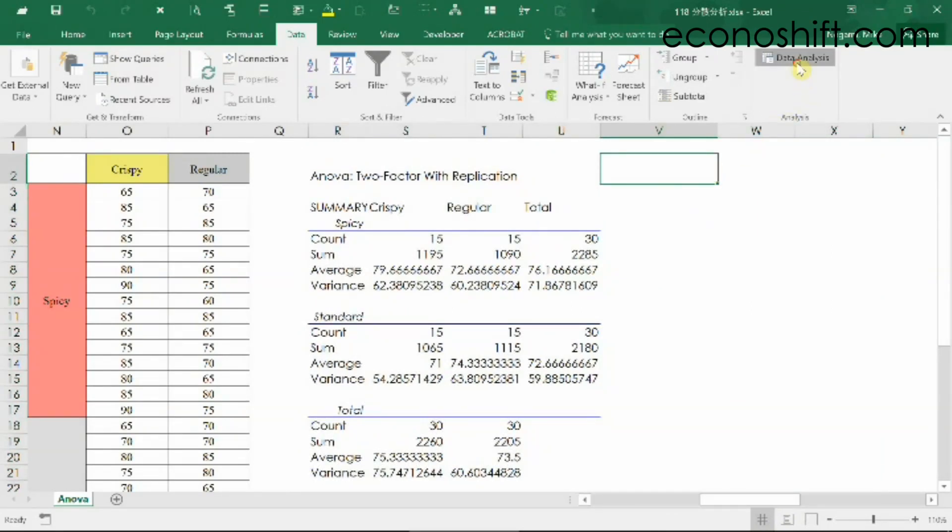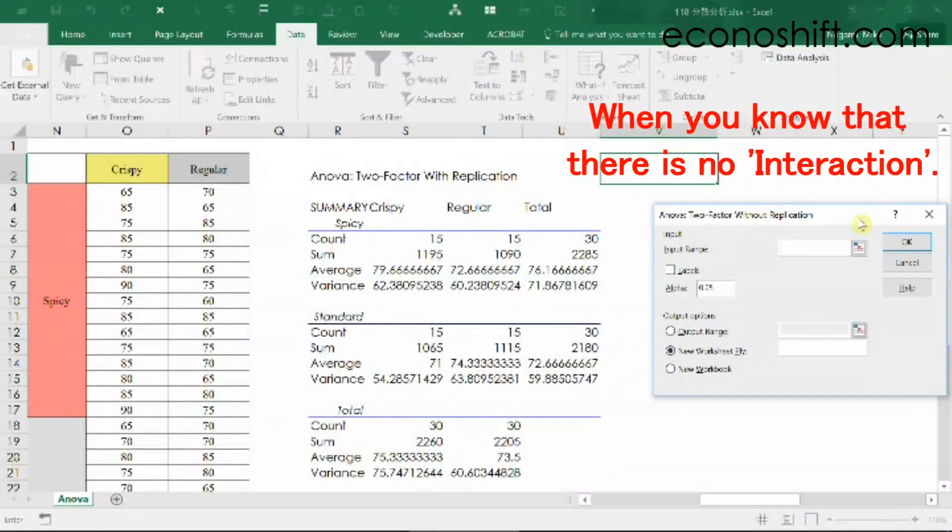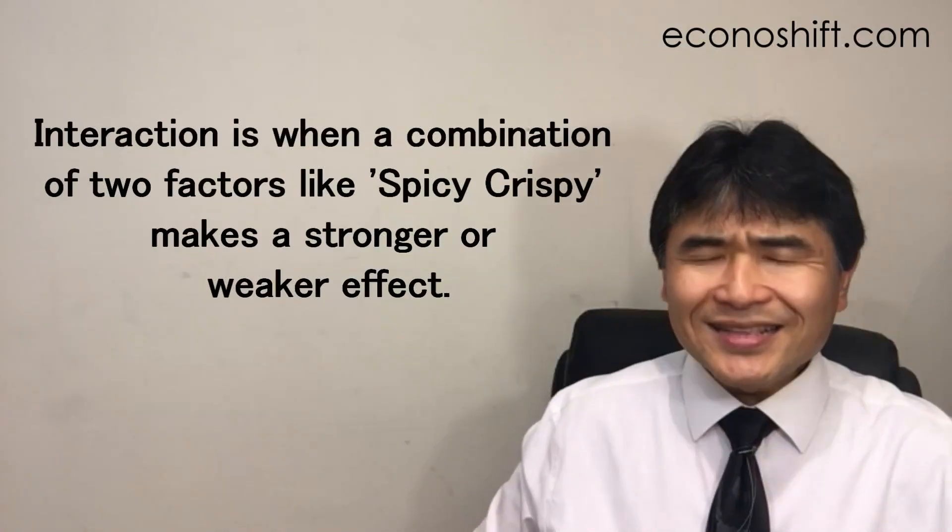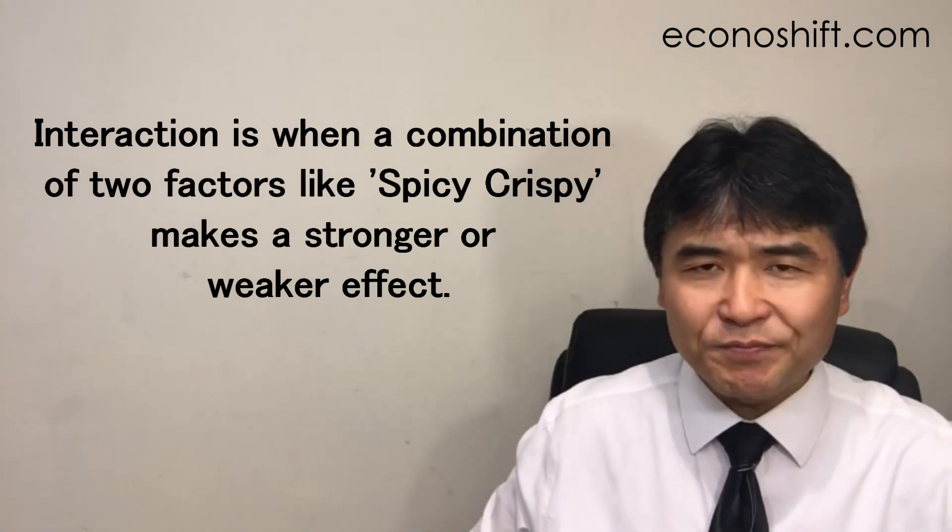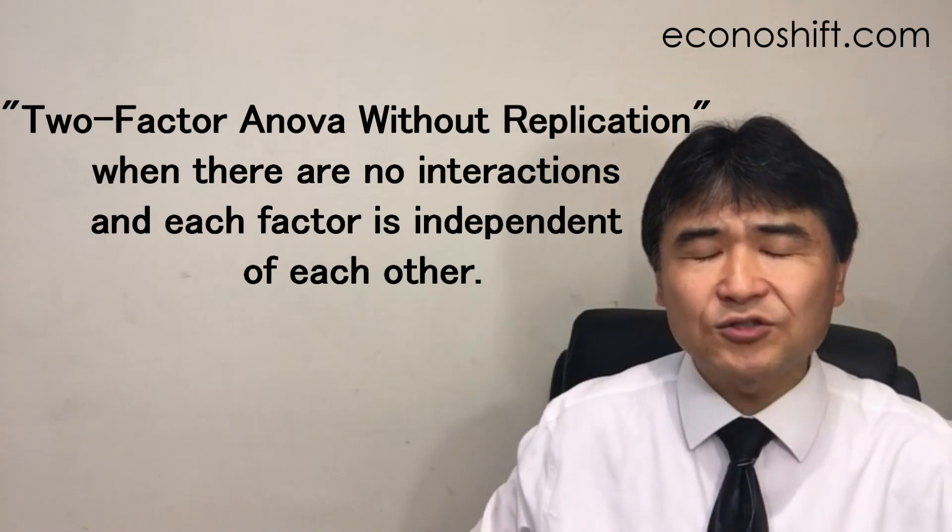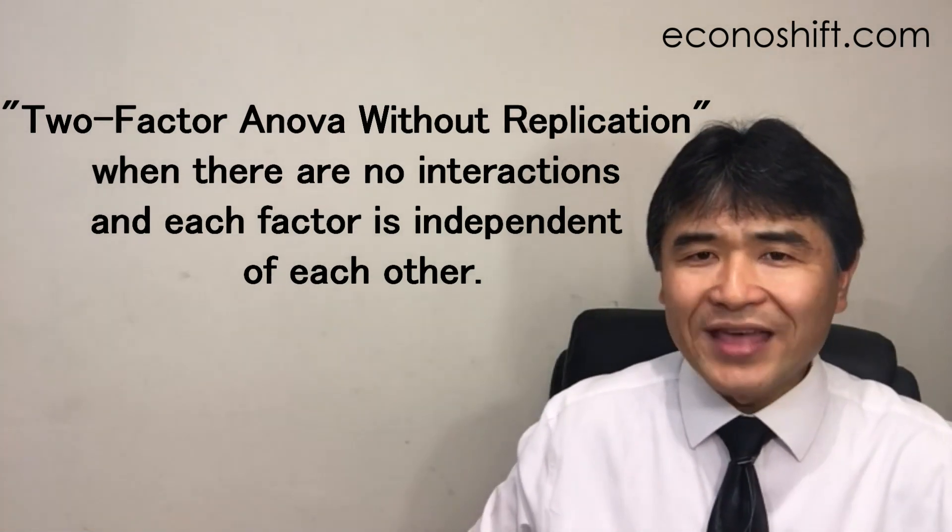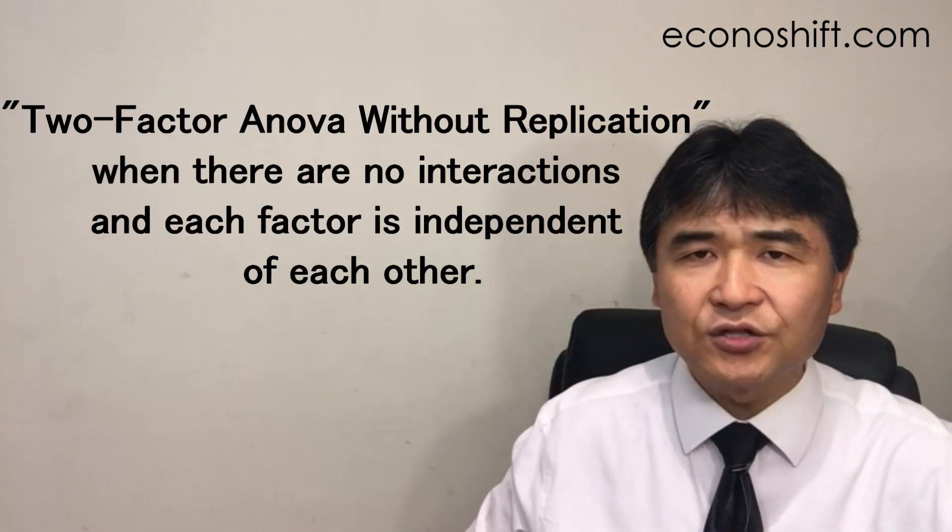By the way, there is another tool, two factor without replication, in Excel's data analysis tools. You'd use it when you know that there is no interaction. Interaction is when a combination of two factors like spicy crispy makes a stronger or weaker effect. Therefore, use two factor ANOVA without replication when there is no interaction and each factor is independent of each other.